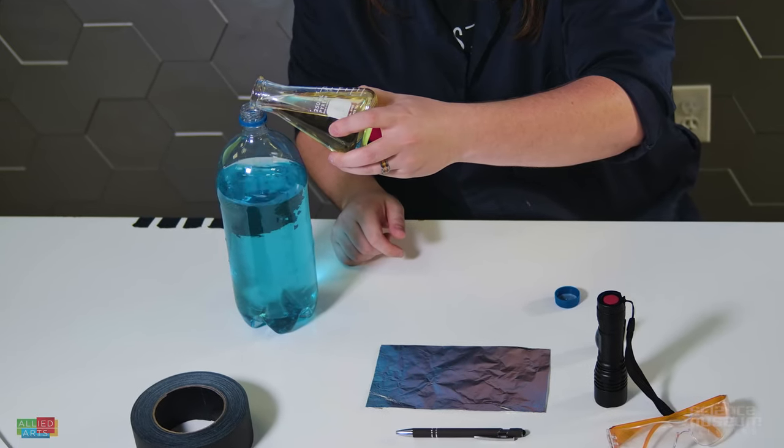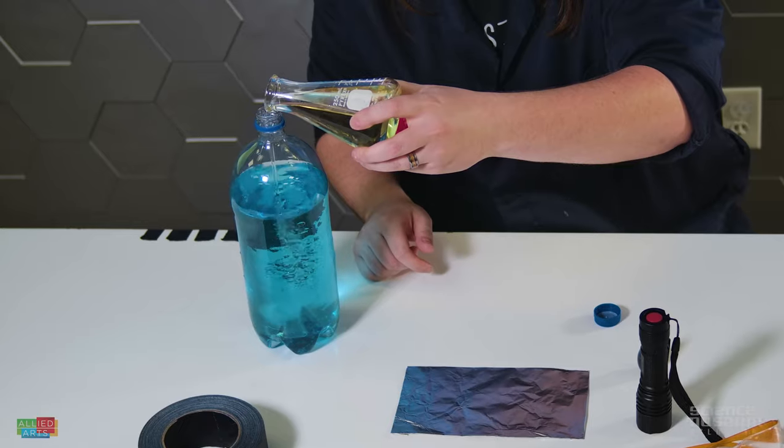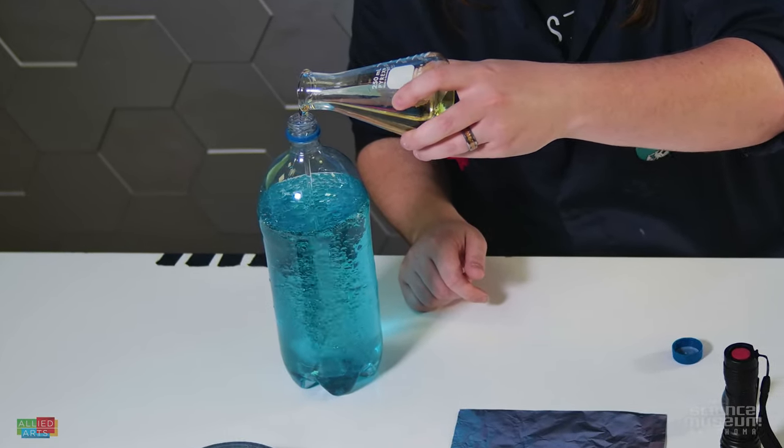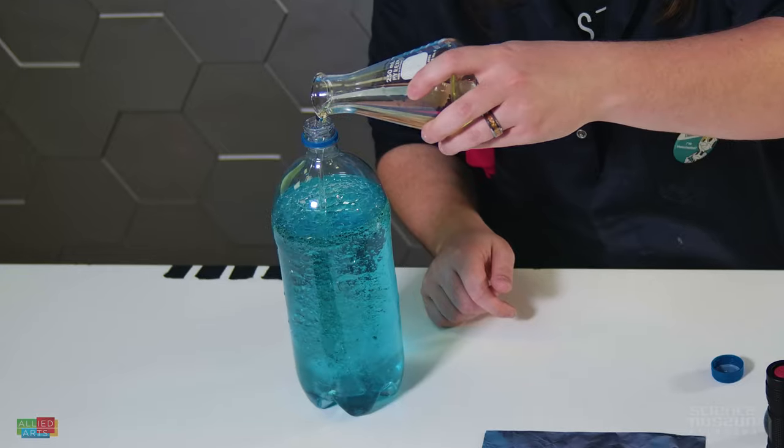Now, pour a fourth of a cup of oil into the bottle. Put the cap on the bottle and wipe clean the bottle to make sure no oil or water is on the outside.